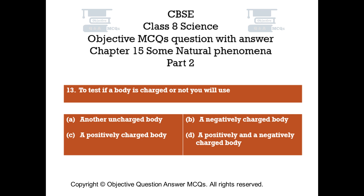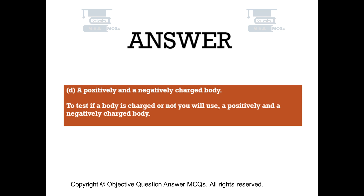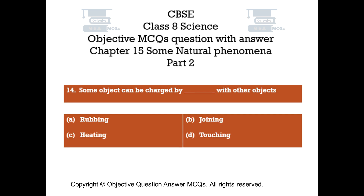Question number 13: To test if a body is charged or not, you will use. Option A: Another uncharged body. Option B: A negatively charged body. Option C: A positively charged body. Option D: A positively and a negatively charged body. The right answer is Option D — a positively and a negatively charged body. To test if a body is charged or not, you will use a positively and a negatively charged body.